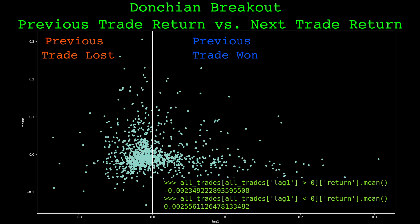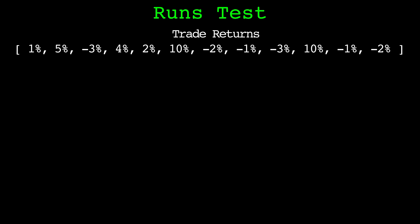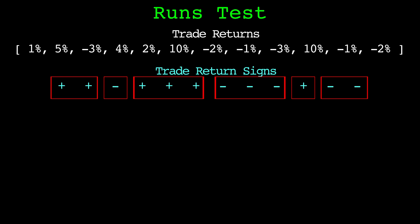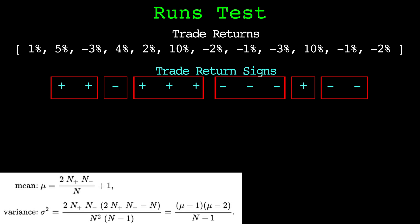While looking at a scatter plot is a good way to visualize relationships for trade dependence, there's a tool from statistics called the runs test. This is useful for finding relationships where the previous trade being a winner or loser is informative. To do the runs test, we transform the sequence of trade returns to a sign — negative for losing trades and positive for winning trades. We count the number of runs in the sequence. A run is a subsequence of equal signs. In this example series we have six runs.